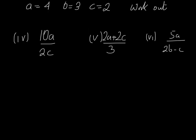Another few examples. Same A, B and C: A is 4, B is 3 and C is 2, and we're asked to work out the following slightly more complicated expressions. 10A all divided by 2C. So that's 10 multiplied by A, A is 4, all divided by 2 multiplied by C which is 2. 10 multiplied by 4 is 40 and we're dividing that by 2 multiplied by 2 which is 4, and 40 divided by 4 is clearly 10. That's our answer.